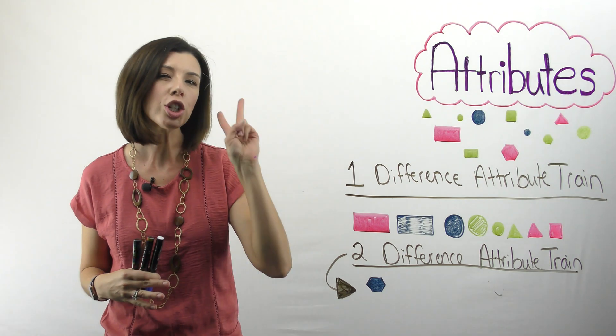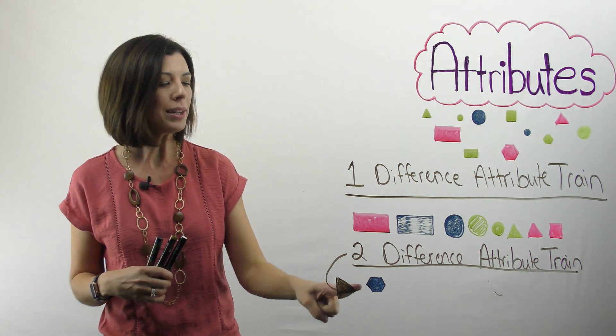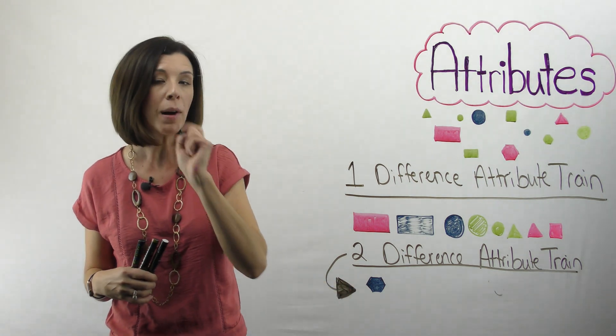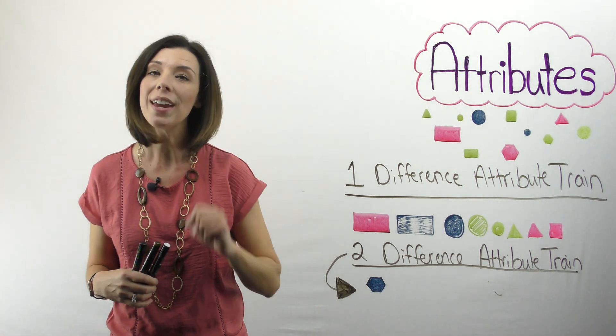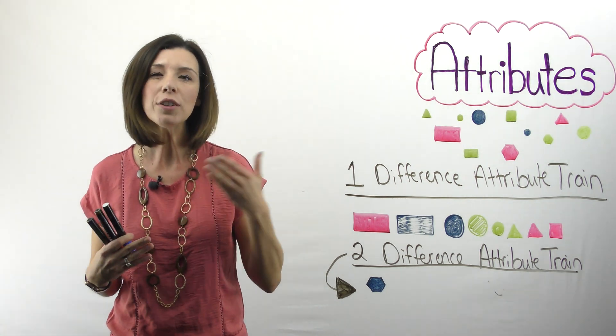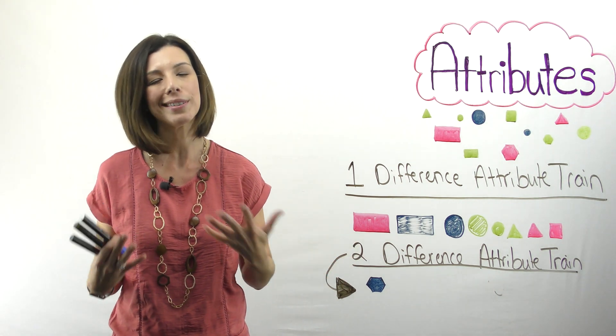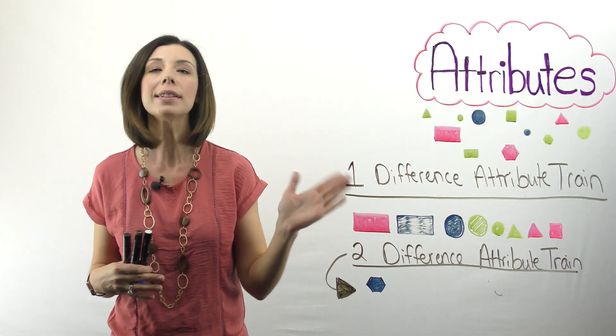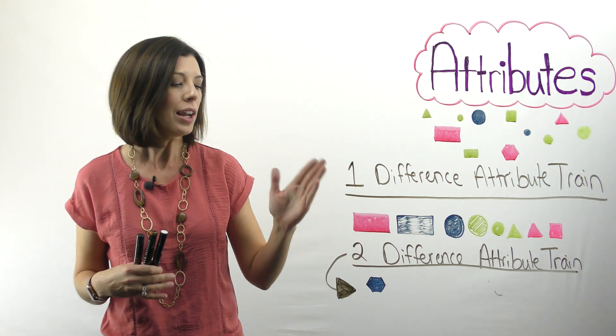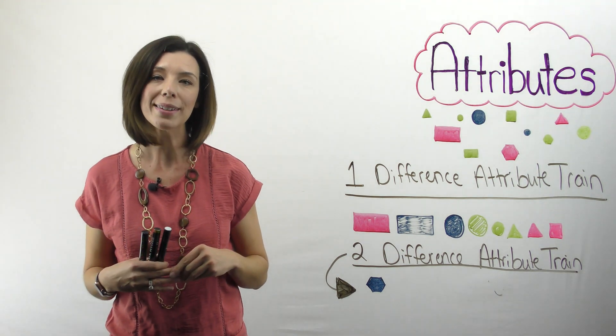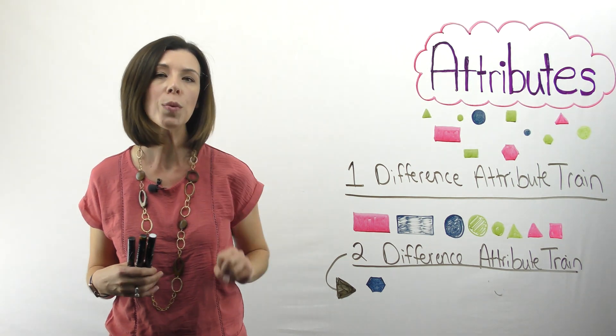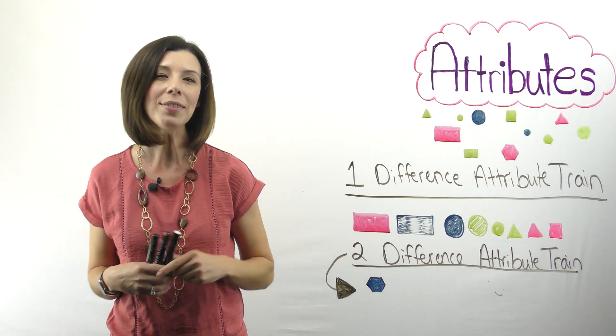This time we want to change two attributes. I'm going to start with the, we're going to call this the small blue thin hexagon. And again, thin versus thick on your manipulatives means something when I'm drawing them in two dimensions. It's not exactly helpful. So let's leave thin versus thick aside for a moment. So let's call this the small blue hexagon. I want you to change two attributes this time around. Go ahead and give it a shot.